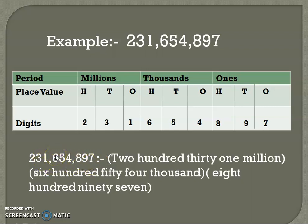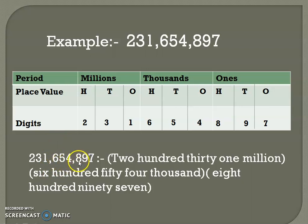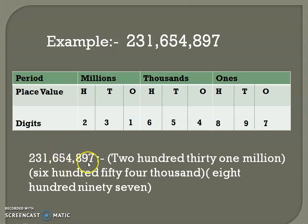How will you read 231 in the millions period? After 231 there are six digits — that means million. In million there are six zeros. So this is the millions period: 231 million, six hundred fifty-four thousand, eight hundred ninety-seven.